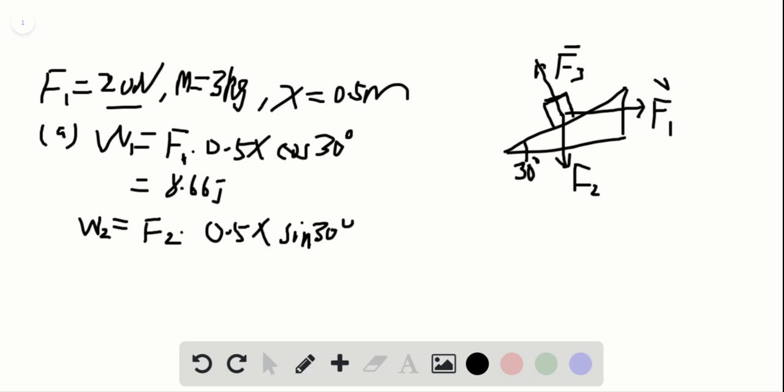However, because the object is moving up and F2 is pointing down, they're opposite, so this is negative. This equals negative 7.35 joules.